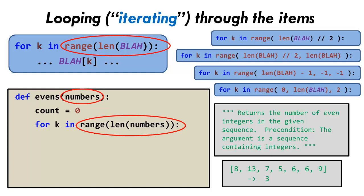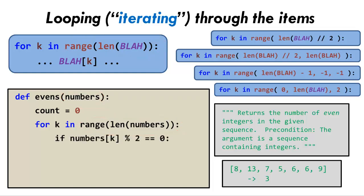Next, as usual in a counting problem, we look to see if the item on this iteration of the loop is to be counted — that is, we bring in an if statement. Here, we check if the item in the sequence, numbers[k], is even. To check whether it is even, we use the percent operator, which does division — here division by 2 — and returns the remainder from that division. If the remainder when we divide by 2 is zero, that means that the number is even. Dividing by 2 and taking the remainder and seeing if that remainder is zero is how you check whether an integer is even.